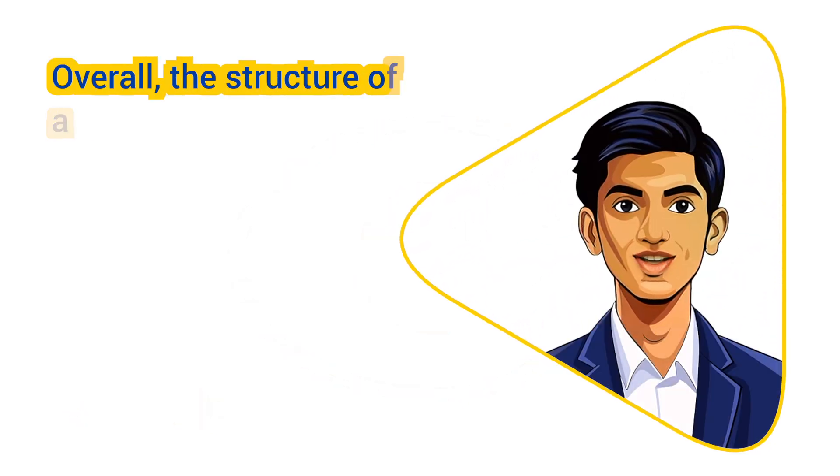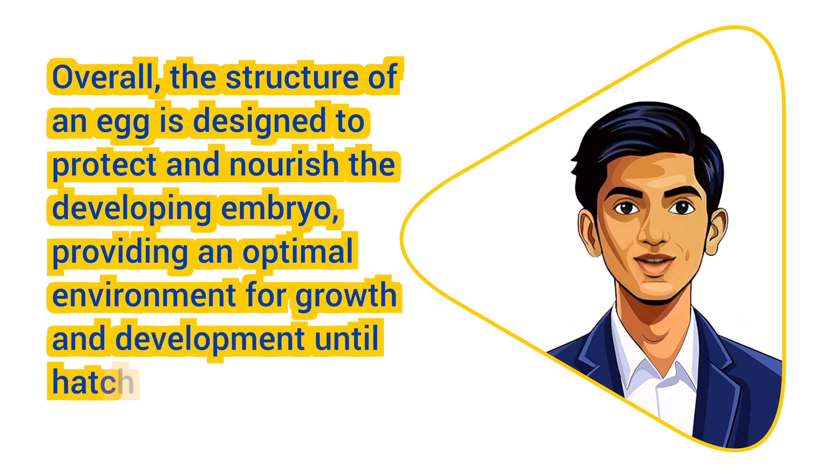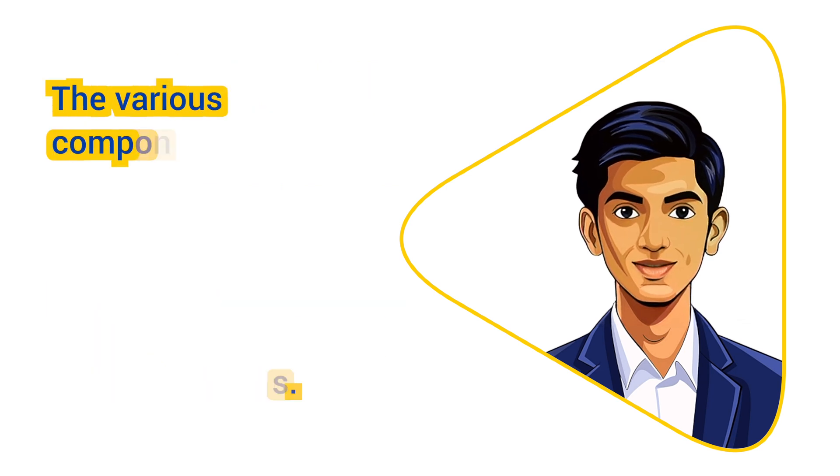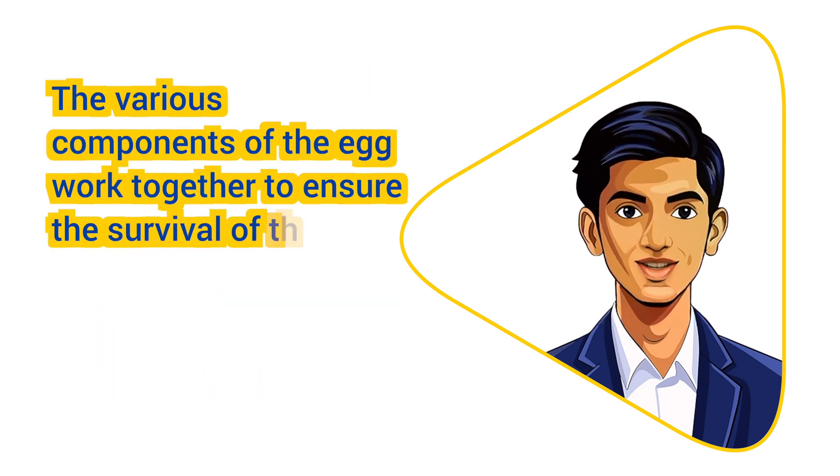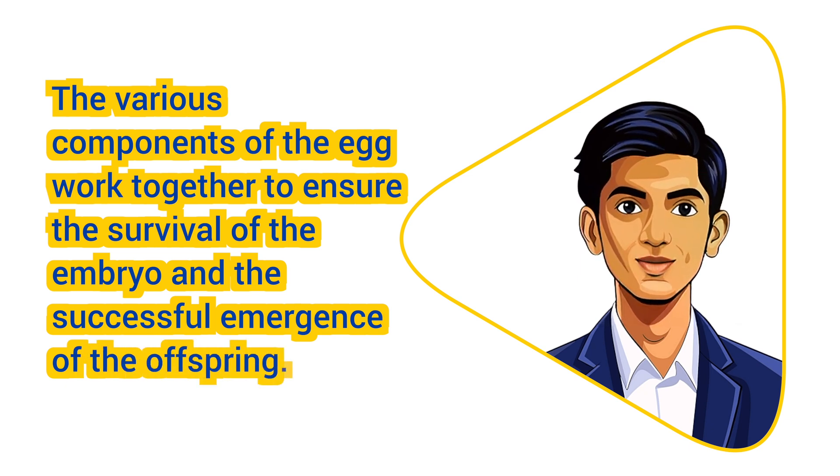Overall, the structure of an egg is designed to protect and nourish the developing embryo, providing an optimal environment for growth and development until hatching occurs. The various components of the egg work together to ensure the survival of the embryo and the successful emergence of the offspring.